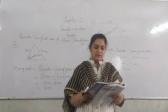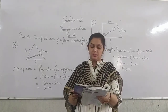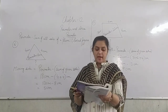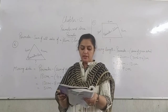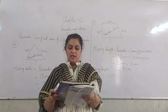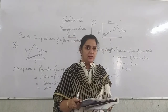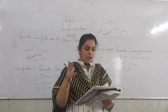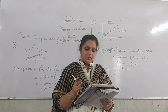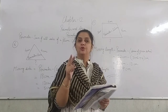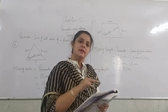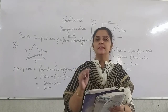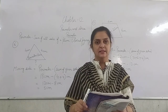Eighth question: find the missing length of the given triangle if its perimeter is 21 cm. Two sides are given. We will use the same formula: Missing length equals perimeter minus sum of given sides, and that will give us the missing length.